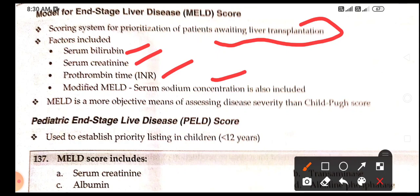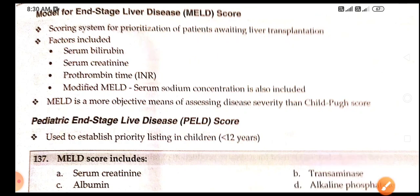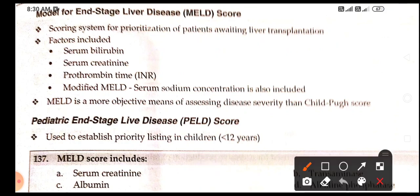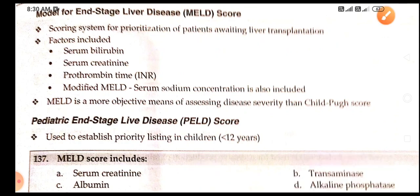PELD is the Pediatric End-Stage Liver Disease score, used to establish priority in children less than 12 years of age. To recap, the MELD score includes serum bilirubin, serum creatinine, prothrombin time, and sodium.